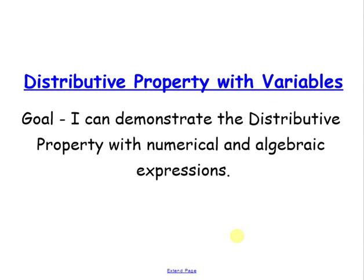Distributive property with variables. We're still going to work forwards and backwards, but we're going to add in one piece of extra information, and that is variables. So you're going to start to see a variable, or in some cases more than one variable in your distributive property problems. But we're going to work through them and they're not too bad at all. I can demonstrate the distributive property with numerical expressions, and remember that means only numbers, and algebraic expressions, and remember that means with a variable.